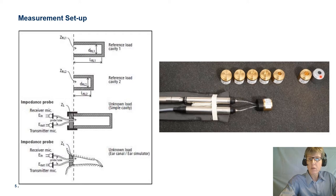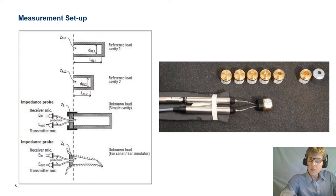The limitations associated with the two-load method are that it starts to break up when the frequency approaches the first anti-resonance, which typically happens around 5 to 6 kHz in a typical human ear canal, and that it tends to generate a non-physical negative resistance. So improvements were required before we could use the method for measurements on humans.